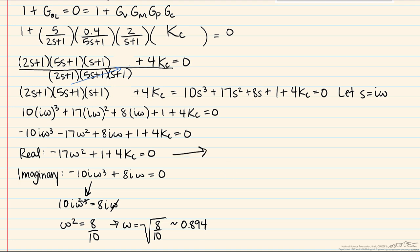So that gives us our omega value. This here represents the ultimate frequency, so we can then find the ultimate gain using the second equation. Using the real equation we'll have negative 17 times 8 over 10, which is omega squared, plus 1 plus 4kc equals zero. After some math we see that kc, and in this case this would be the ultimate gain, equals 3.15. So we have found the ultimate gain.